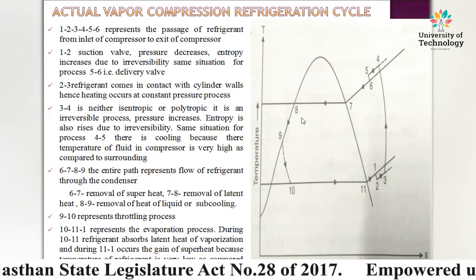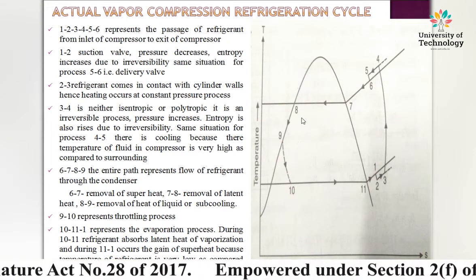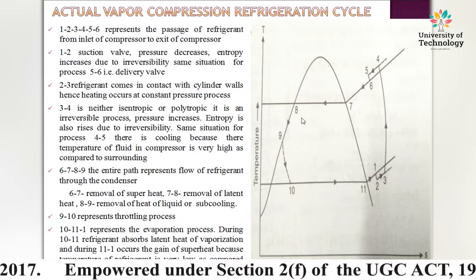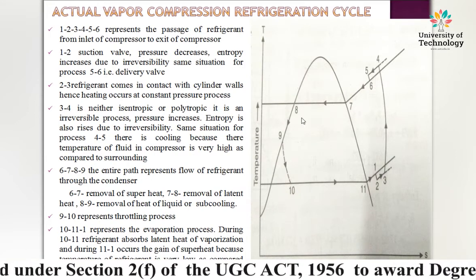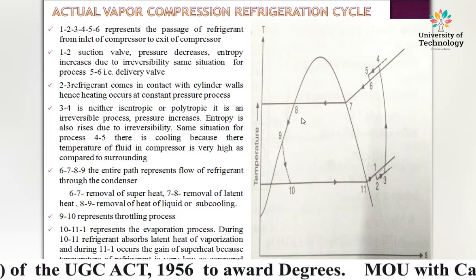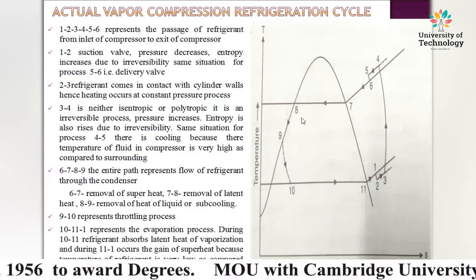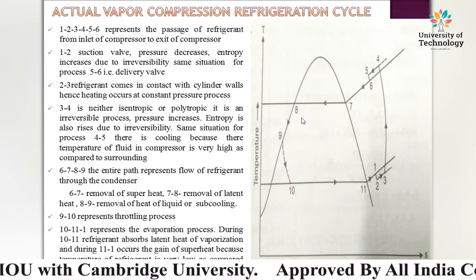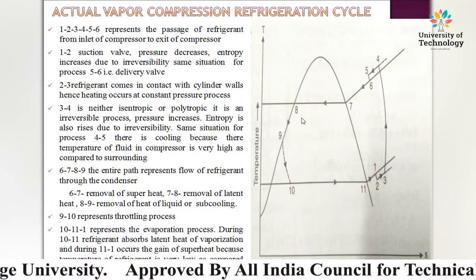To summarize the condenser section: process 6→7 is removal of superheat; process 7→8 is removal of latent heat (condensation); and process 8→9 is subcooling, where heat is removed from the liquid refrigerant.